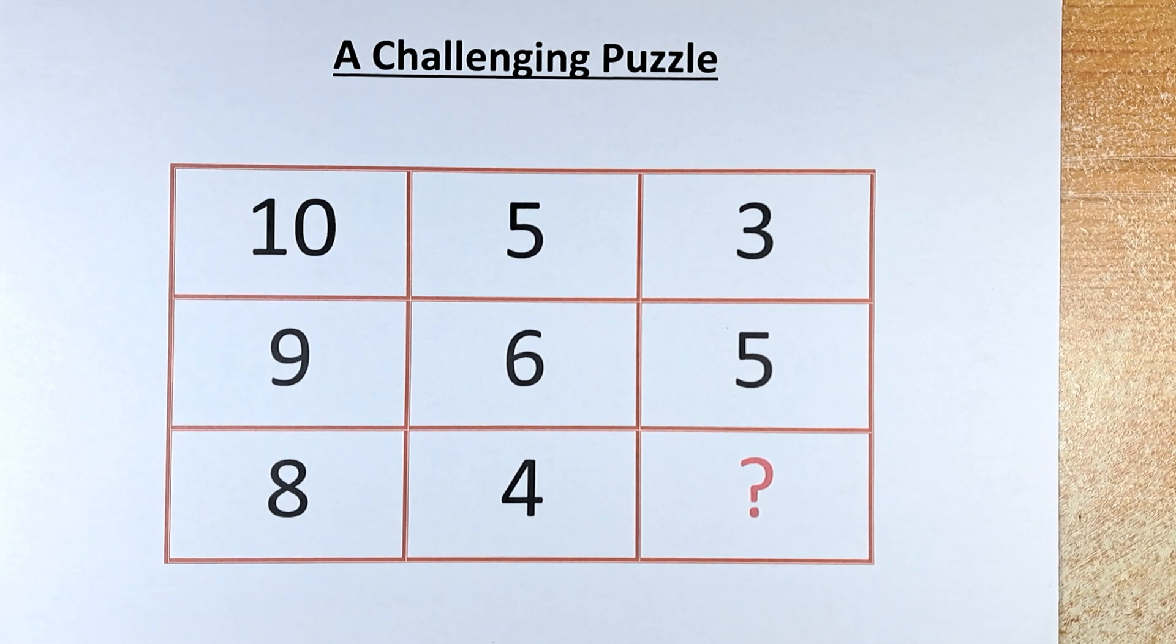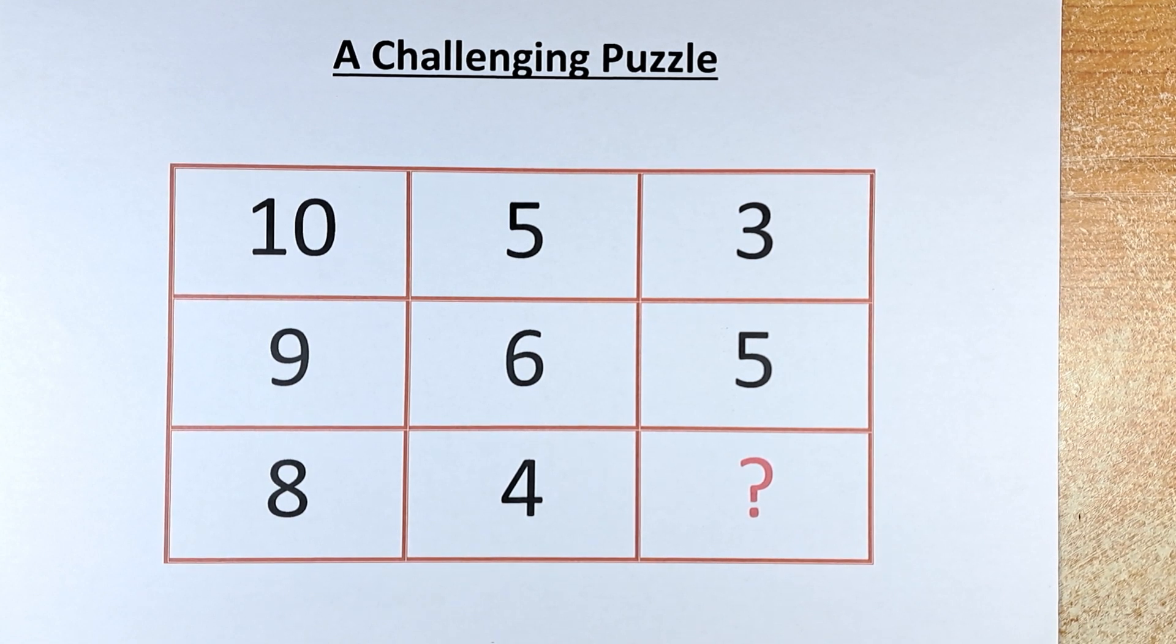Welcome back to the solution of a challenging puzzle. The numbers in the puzzle are: in the first row, we have 10, 5, 3. Second row: 9, 6, 5. And in the final row, we have 8, 4 and the question mark.